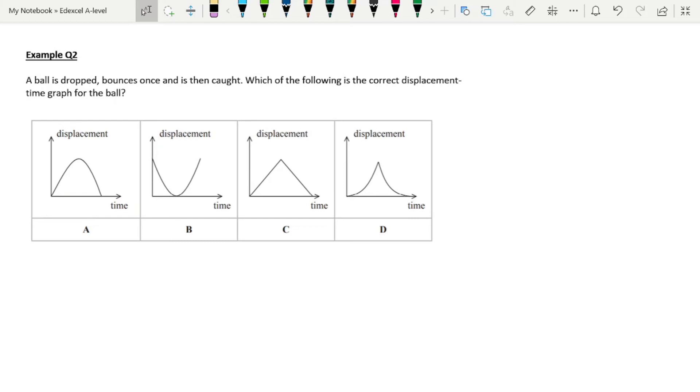You need to start thinking about what is going to happen to this ball. First of all, it leaves the hand, and displacement is going to be from the hand, which means it must start at zero. That eliminates B. As it falls, it's going to accelerate because of gravitational force, which means the velocity can't be constant. On a displacement-time graph, constant velocity is represented by a straight line. So we know it can't be constant, and that eliminates C.